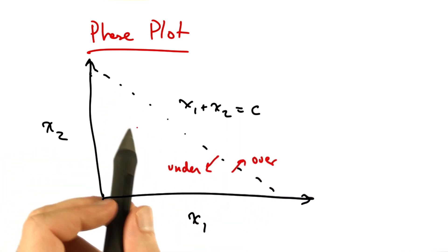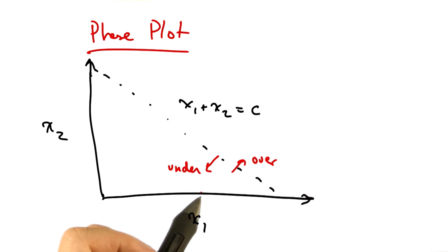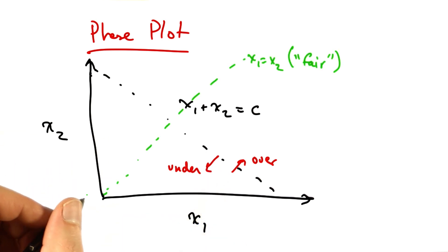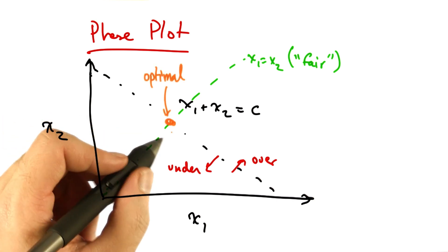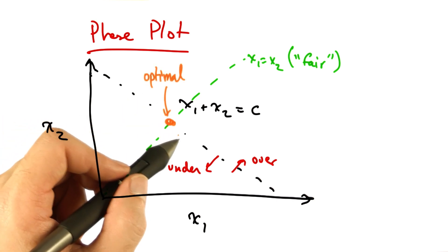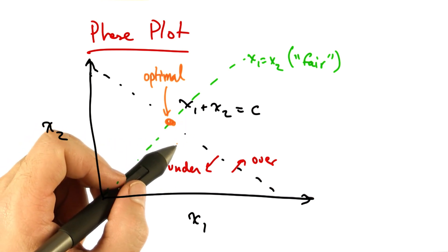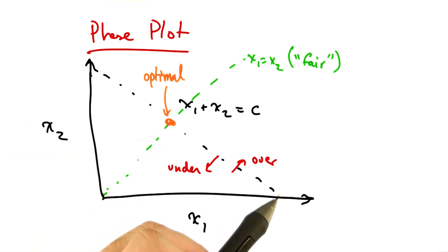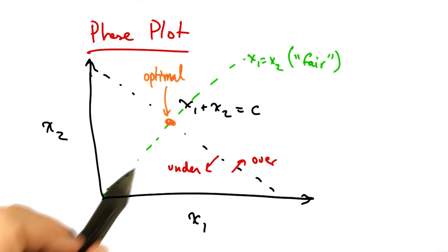Anything to the left of this diagonal line represents underutilization of the network, and anything to the right represents overload. We can also represent another line, x1 equals x2, as some notion of fair allocation. So the optimal point is where the network is neither under or overutilized and when the allocation is fair. Being on this diagonal line represents efficiency, and being on the green diagonal line represents fairness.